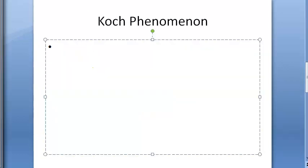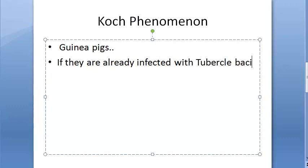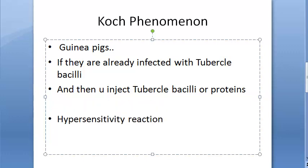Robert Koch observed that guinea pigs already infected with tubercle bacilli develop a hypersensitivity reaction when injected again with tubercle bacilli or its protein. They are already infected, and you inject tubercle bacilli or its protein again, and they develop a hypersensitivity reaction. This is called the Koch phenomenon.